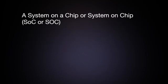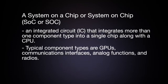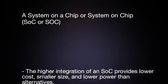Another definition for a system-on-a-chip is an integrated circuit that integrates more than one component into a single chip along with a CPU. Typical component types are GPUs, communication interfaces, analog functions, and radios. If it includes programmable logic, then it is a programmable SOC or an SOC FPGA. The higher integration of an SOC provides lower cost, smaller size, and lower power than alternatives.